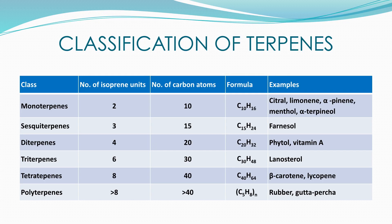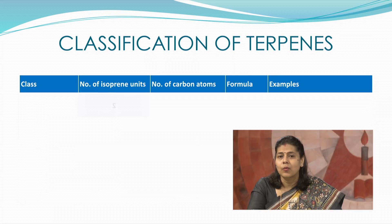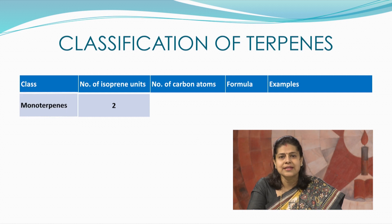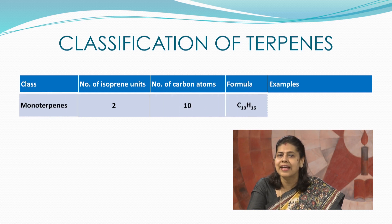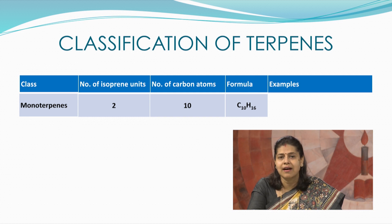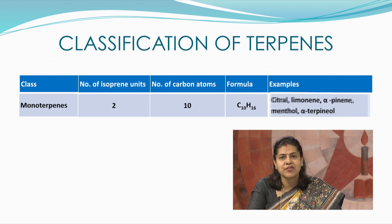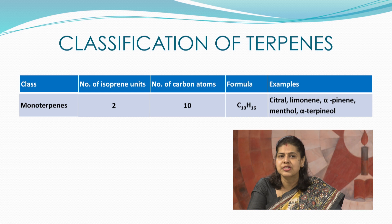As you can see here in this table, there are various classes of terpenes. When there are 2 isoprene units, we get monoterpenes having the molecular formula C10H16. A few examples of terpenes of this class are citral, limonene, alpha-pinene, menthol, and alpha-terpineol.